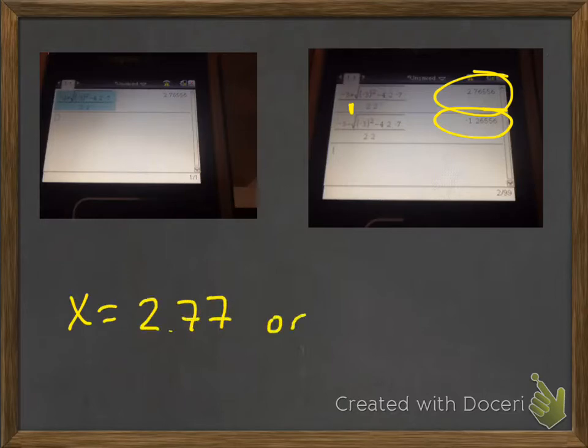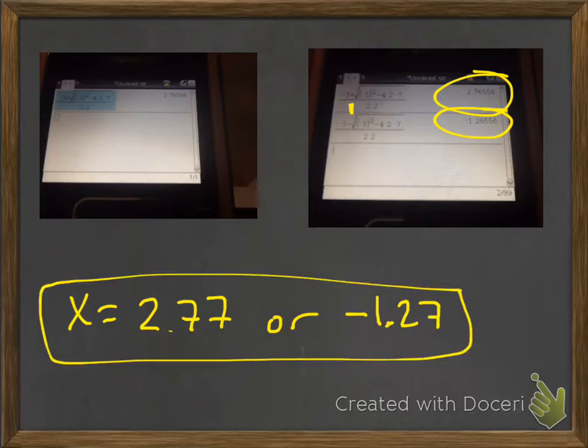So, x is equal to 2.77, or negative 1.27. So, that's it for quadratic formula. It's really that simple. I think this is one of those, the more we practice with it, the easier it will get, and you'll probably like this a whole lot. So, go ahead, if you do have any questions, feel free to ask, but make sure you get these notes. Thank you very much.